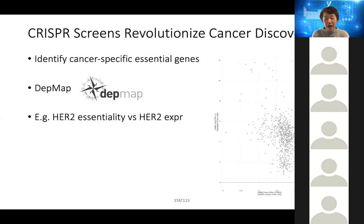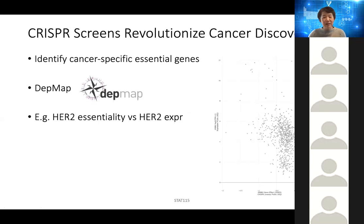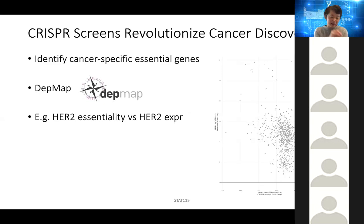HER2 is indeed an oncogene. But there are also many housekeeping genes that are also negatively selected — for example, ribosomal genes. If you knock out the ribosome, they're going to die regardless. Those are not the genes we want to discover. The genes that are pan-essential, meaning every cell needs them, cannot be targeted in cancer. But there are some other genes where most cells are okay, but in specific cancer cells with certain mutations, a gene suddenly becomes very essential. That's a really good drug target — if the cancer has this mutation and we have a drug targeting either that gene or some other gene, that's a very exciting way to discover cancer target genes.